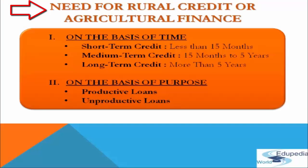Now we come to the point of what is the need for rural credit or agriculture finance. Credit needs of the farmers can be examined from two different angles: first, on the basis of time, and second, on the basis of purpose. On the basis of time, credit needs of the farmer are classified into three categories.